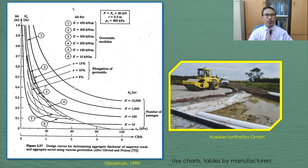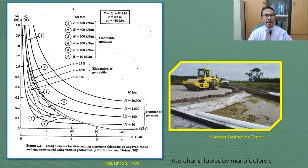This chart should be used with the following conditions: P equals P sub S, representing a single axle load for construction vehicle equals to 80 kN; maximum rut equals 0.3 meter; and P sub C representing tire pressure equals 480 kPa. The relatively thick curves represent the anticipated number of passages N of the construction vehicle, with curves for N equals 10, 100, 1,000, and 10,000 passages. The relatively thin curves numbered 1 through 6 represent the geotextile modulus.